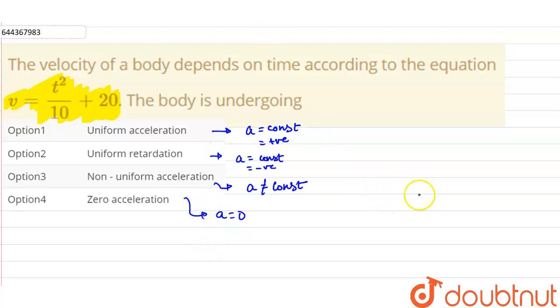Now, the equation given to us is, velocity v is equal to t square upon 10 plus 20.